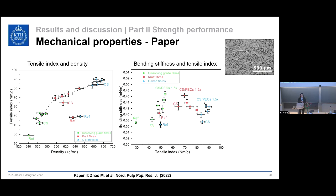In terms of bending stiffness, taking the dissolving-grade fibers as an example: adding cationic starch increased bending stiffness by 2.6%, but on top of the cationic starch, adding PEX increased bending stiffness by 25%. Bending stiffness is very important in packaging board — it prevents collapse. The same trend was observed for kraft fibers and CMC-treated birch fibers.